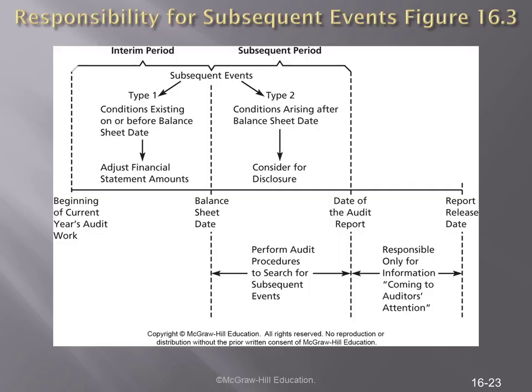Let's now shift our attention to subsequent events, starting with key definitions. Let's say the balance sheet date is December 31st. The date of the audit report — which is the completion of the audit, the end of fieldwork, and generally the date management signs the representation letter — is, say, March 31st. The financial statements are then released April 1st. So we have three dates. Anything occurring up through the balance sheet date is the interim period; we adjust financial statements accordingly.